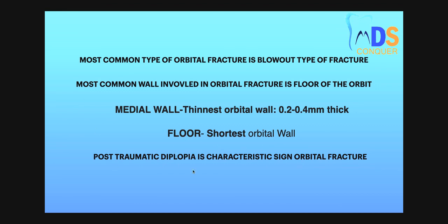All these five points are very important — every point can come as an MCQ. To summarize: the most common type of orbit fracture is blowout; the most common wall involved in the fracture is the floor; the thinnest wall is the medial wall, with a thickness of 0.2 to 0.4 mm; the shortest wall of the orbit is the floor; and the characteristic sign of the orbital fracture is post-traumatic diplopia.